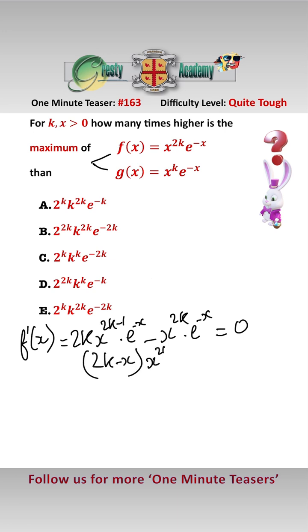That gives us (2k-x) x^(2k-1) e^(-x) equals 0, i.e. it's a maximum when 2k equals x. So f_max is equal to (2k)^(2k) e^(-2k). That's f_max sorted out.